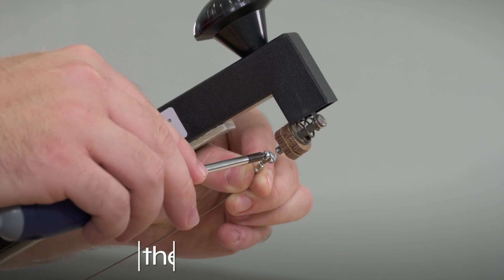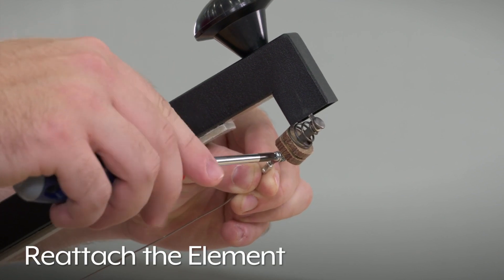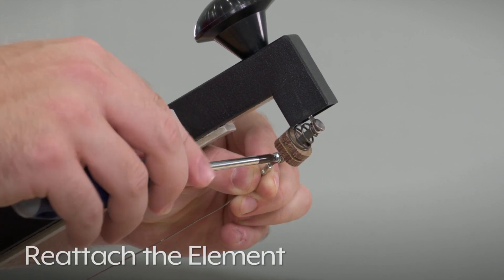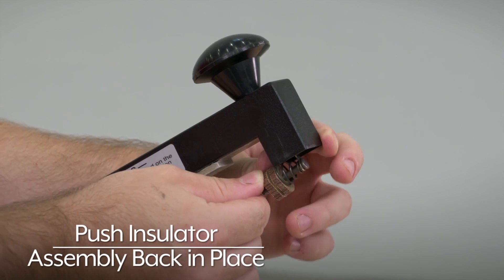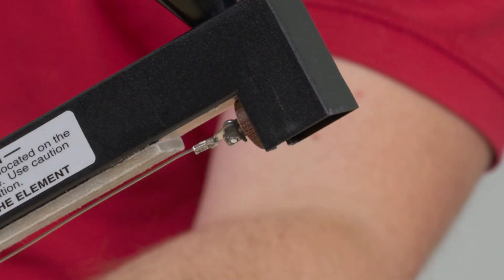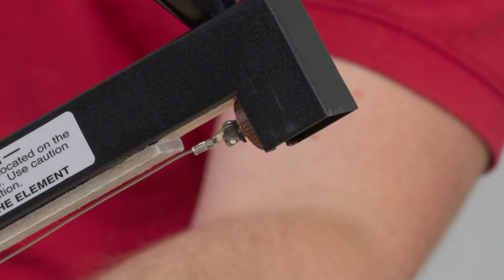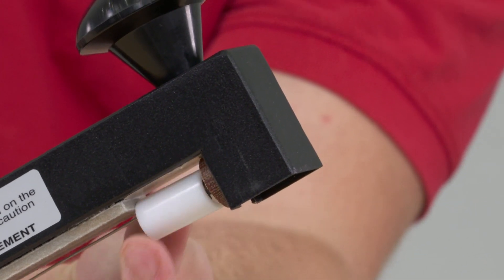Align the other end of the new wire with the hole in the insulator assembly post and replace the screw. Push the insulator assembly back into place inside the end of the sealing arm and replace the white plastic insulator sleeve.